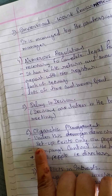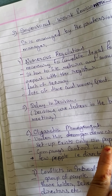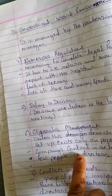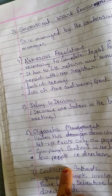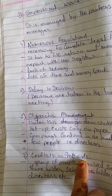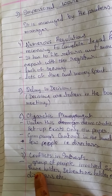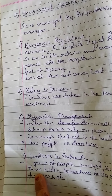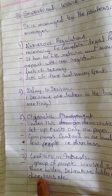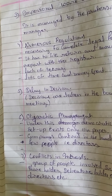Oligarchic management: under this, democratic setup exists only on paper, but in reality its control lies in the hands of few people, that is, the board of directors. Conflict of interest: because a large number of people are involved in this company, conflict arises. The examples of these groups of people are shareholders, debenture holders, employees, directors, etc.